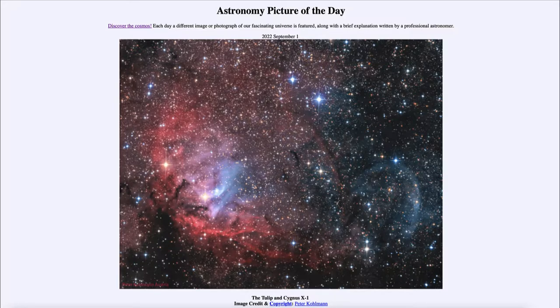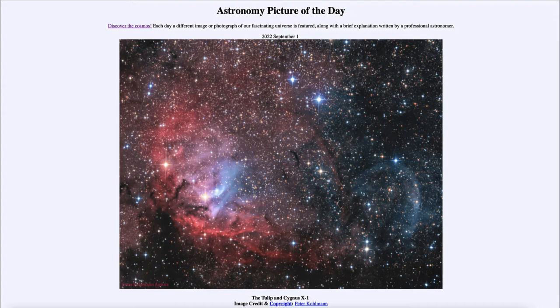So this was one of the first to be identified as a black hole, and we of course continue to look for other black holes and have found evidence of many others over the decades since this was first found. That was our picture of the day for September 1st of 2022, titled The Tulip and Cygnus X-1. We'll be back again tomorrow for the next picture. Until then, have a great day everyone, and I will see you in class.